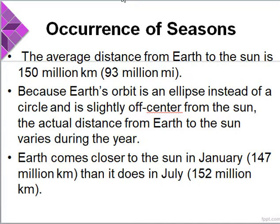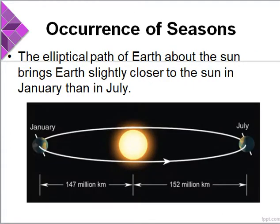The average distance from Earth to the Sun is about 150 million kilometers or 93 million miles. Because Earth's orbit is an ellipse instead of a circle and is slightly off-center from the Sun, the actual distance from Earth to the Sun varies during the year — it is not constant. Earth comes closer to the Sun in January. According to Ahrens and Henson, Earth revolves completely around the Sun in an elliptical path in about 365 days and 6 hours — one year, plus a leap day every four years in February.